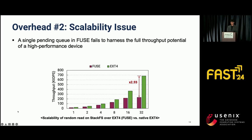Along with the latency breakdown, we also aimed to address the scalability issues of FUSE. To measure scalability, we used the FIO benchmark while increasing the number of threads to evaluate throughput, using StackFS, which forwards I/O requests from the application to the underlying in-kernel file system. The results show that the throughput of StackFS fails to scale once the number of threads exceeds 16, while throughput on native ext4 increases linearly. Furthermore, at 32 threads, the throughput was almost three times lower than ext4. We believe that communication through a single pending queue in FUSE prevents StackFS from achieving scalable performance.